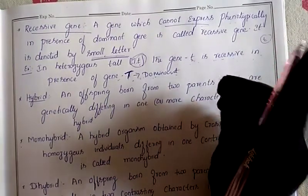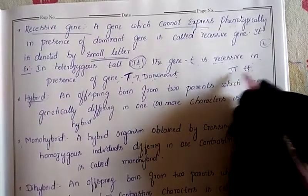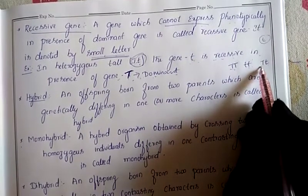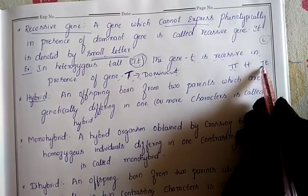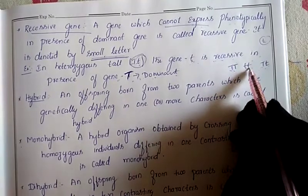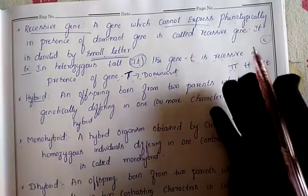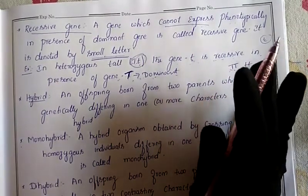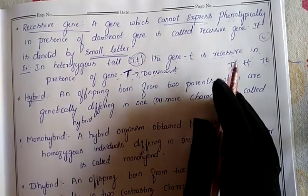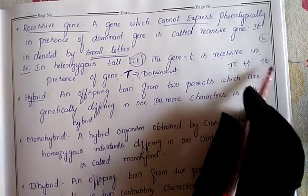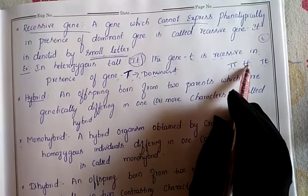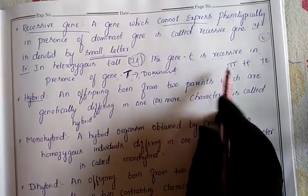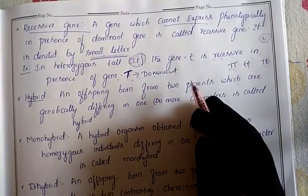The place where genes sit on the chromosome is called locus. If the genes are in the same manner, we call it homozygous condition. If they are different, we call it heterozygous condition - for example capital T and small t. Among these, the dominant gene expressed in capital letters will express its character, while the recessive gene will remain in a suppressed condition.